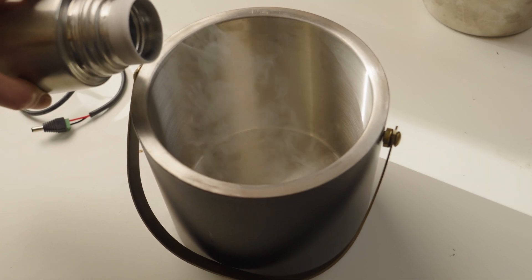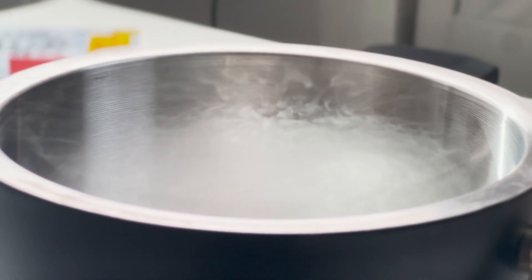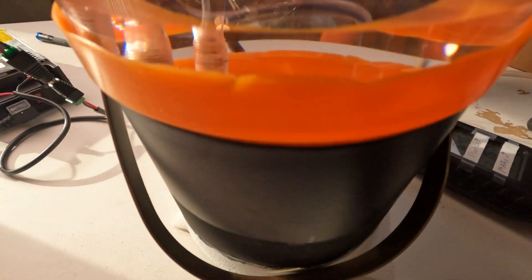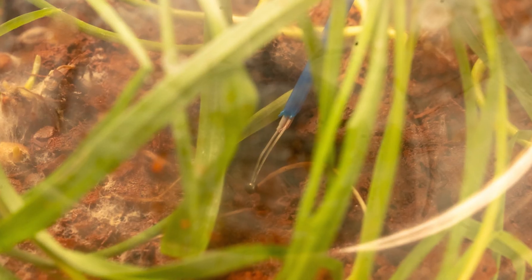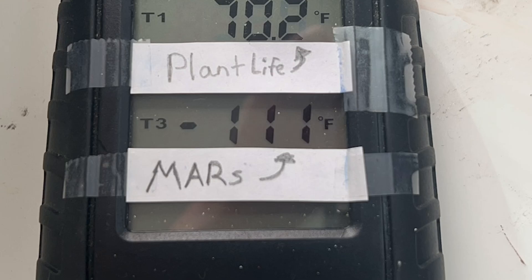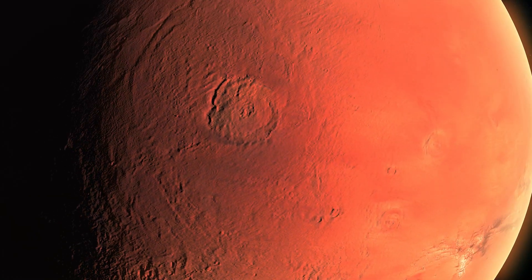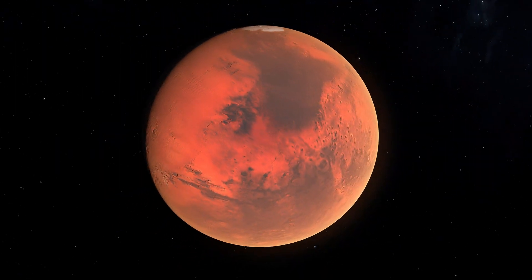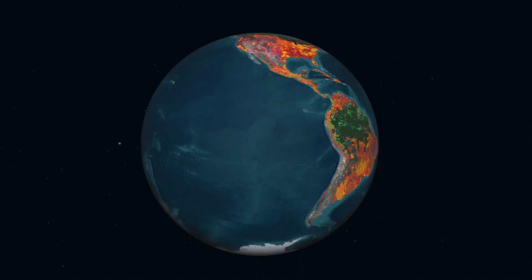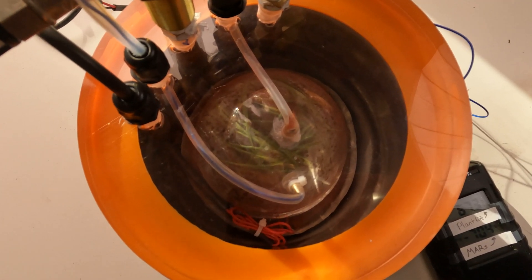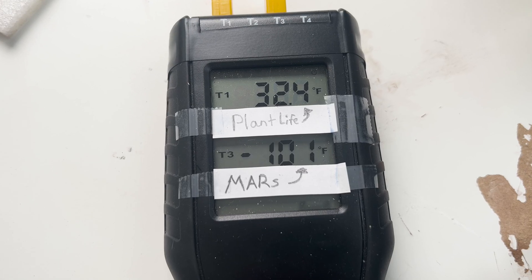For this last test, we're going to submerge our Mars simulator into liquid nitrogen. The temperature surrounding the Mars containment, with the Earth life inside, will begin to drop to negative 100 degrees Fahrenheit. Okay, maybe a little lower. Although that's not quite as cold as Mars can get, we're picking a warmer Mars location. Because just like the coldest part of Earth, you probably don't live there. Now, as the temperature inside of the Mars containment plummets to a near lethal level and condensation begins to form around the inside.